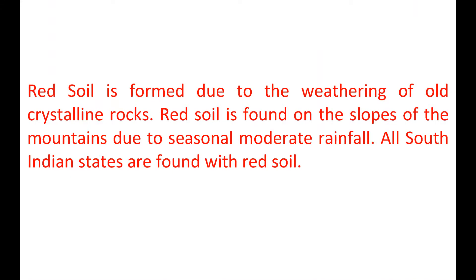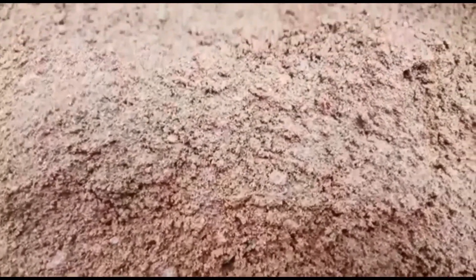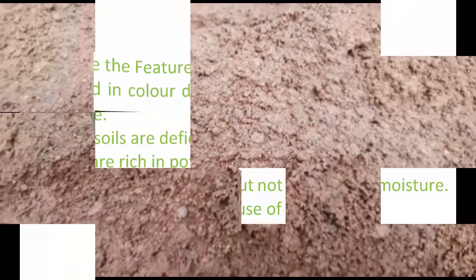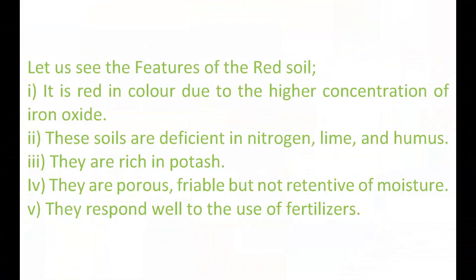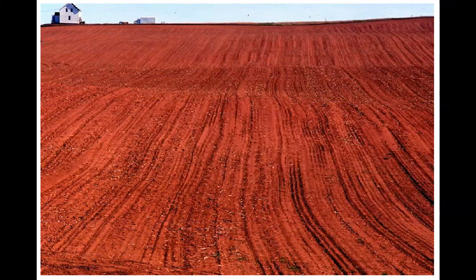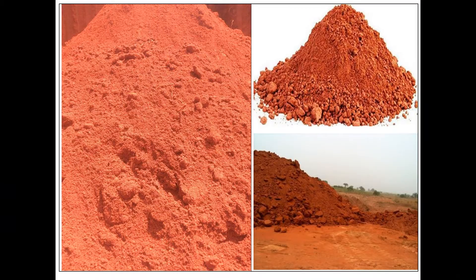Red soil is formed due to the weathering of old crystalline rocks. It is found on the slopes of mountains due to seasonal moderate rainfall. All South Indian states are found with red soil. Its red colour is due to the higher concentration of iron oxide. These soils are deficient in nitrogen, lime, and humus, but rich in potash. They are porous and friable but not retentive of moisture. They respond well to the use of fertilizers.